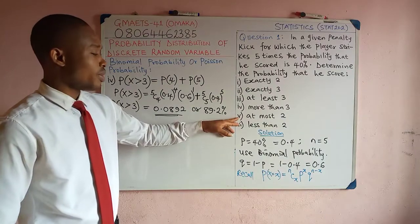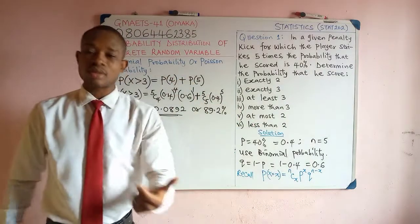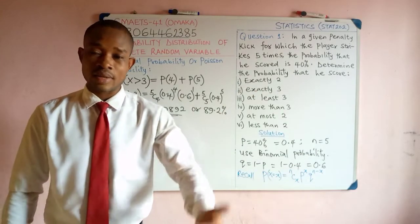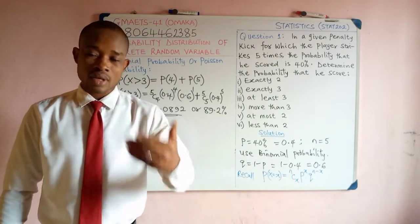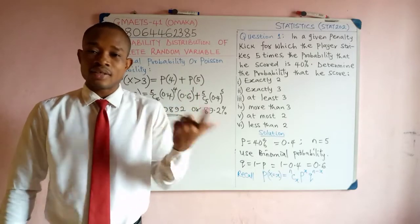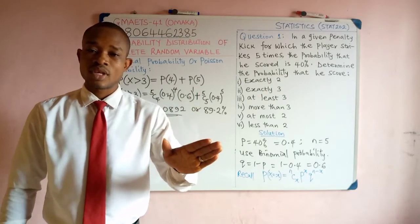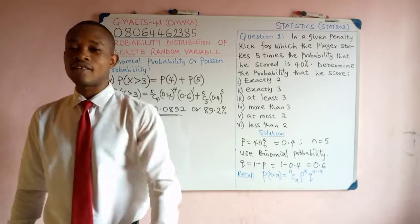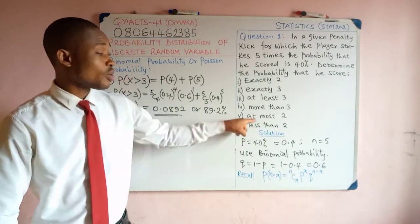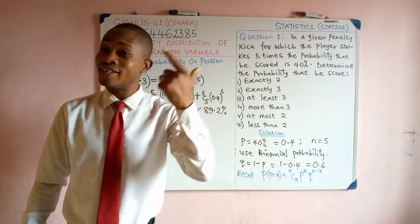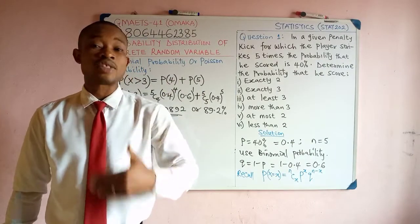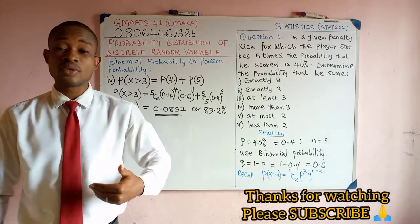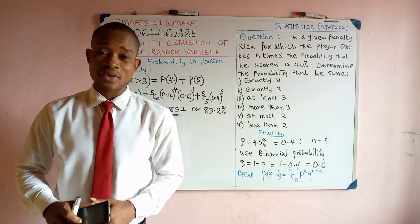Now we look at the probability that he scored at most 2 — another important concept just like 'at least'. At most means the highest the player scored was 2: less than that value or exactly that value. So we will solve this using P(X=0), P(X=1), and P(X=2), because at most 2 means he could have scored 2, 1, or even nothing at all.